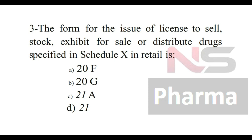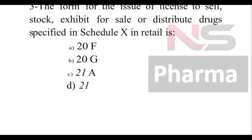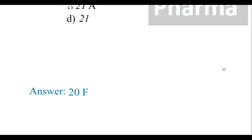Third question: The form for the issue of a license to sell, stock, exhibit for sale, or distribute drugs specified in Schedule H in retail is — Option A: 20F, Option B: 20G, Option C: 21A, Option D: 21. The answer is 20F.